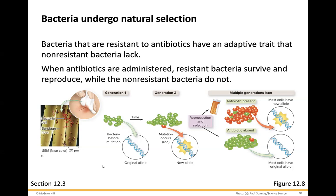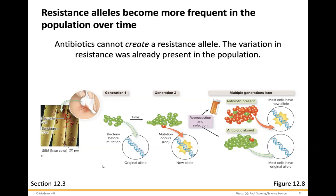When antibiotics are administered, resistant bacteria survive and reproduce, while non-resistant bacteria will die off. One of the virtual labs explores this concept — essentially, if all bacteria susceptible to the antibiotic die off, the ones left are those with antibiotic resistance. If those bacteria grow, it increases overall in the population, allowing resistant alleles to become more frequent over time. Antibiotics cannot create a resistance allele; the variation in resistance was already present in the population.